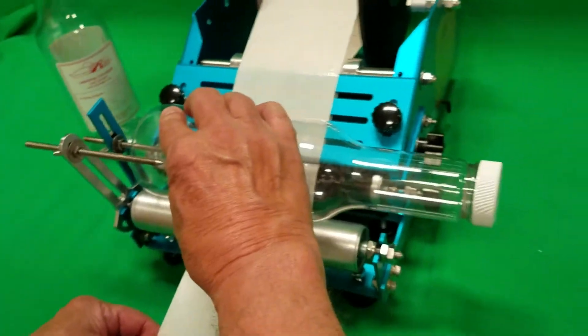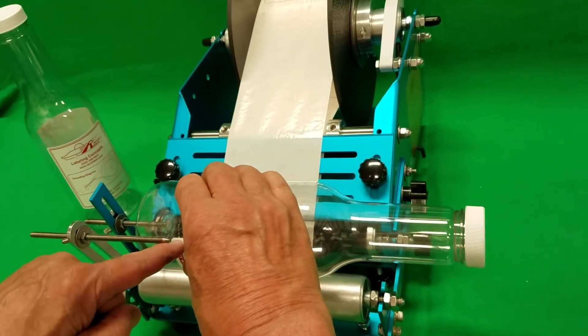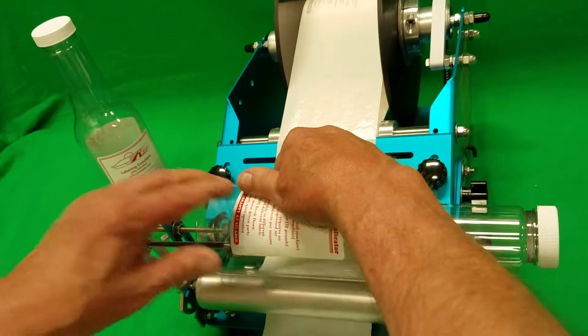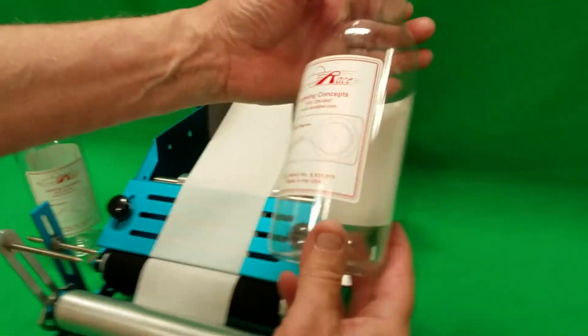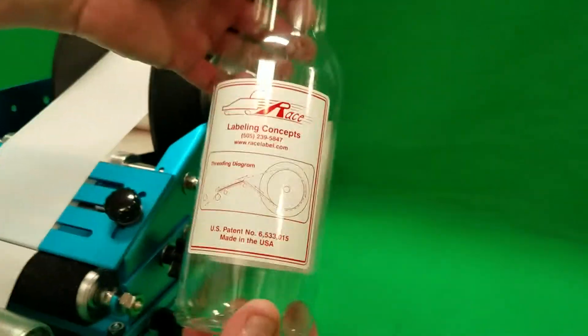So once again, apply the front label, rotate to the gap indicator, apply the back label. As you can see, you've got a nice gap, proper gap between the front and back label.